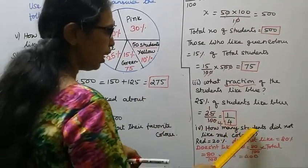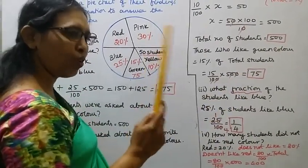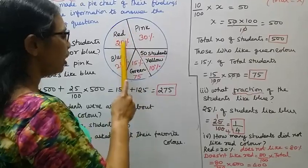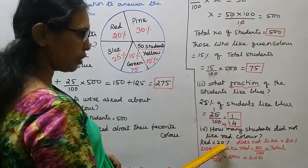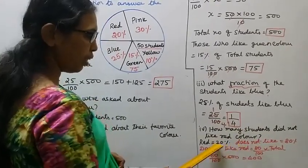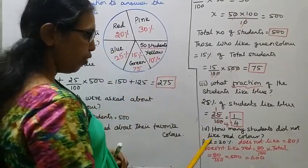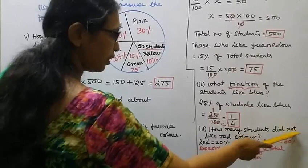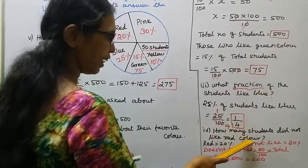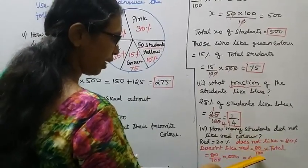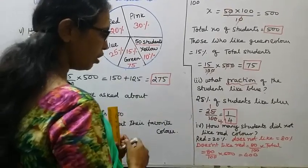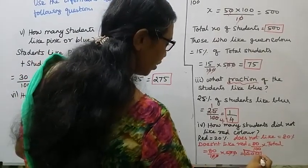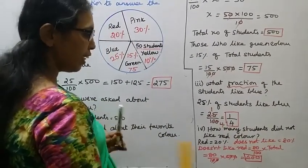How many students did not like red color? Those who like red color are 20%. Those who do not like red color are 100 minus 20, which is 80%. So 80% of 500 equals 80 by 100 into 500, which is 400. 400 students did not like red color.